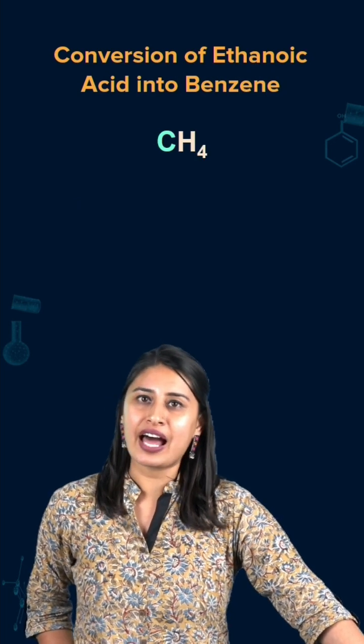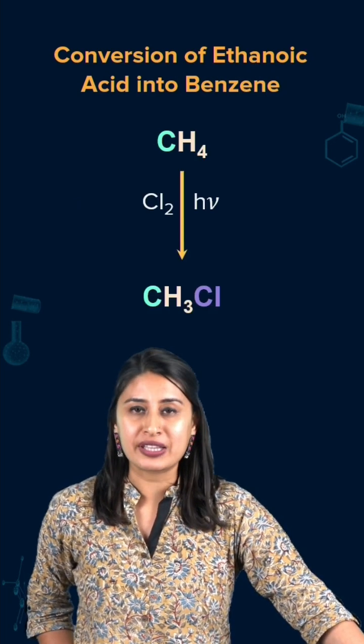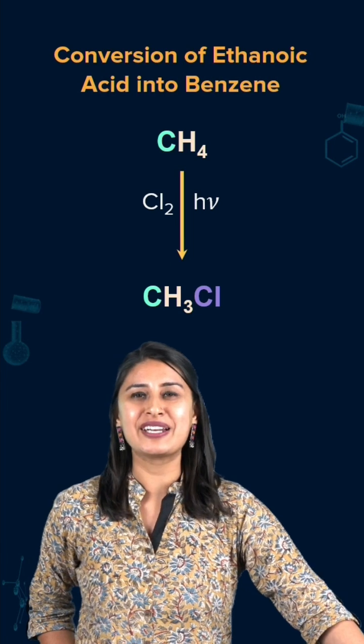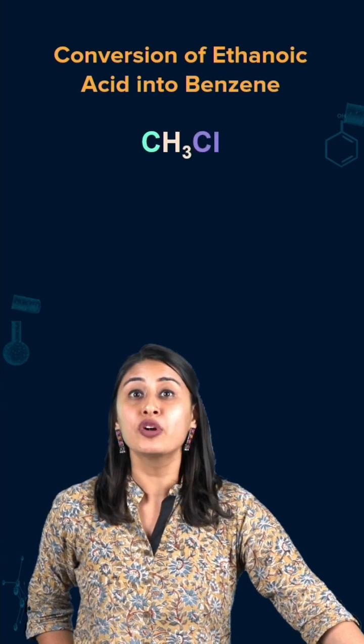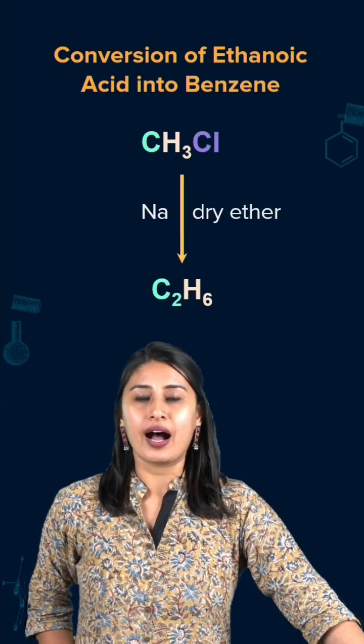Now we have methane. We can do halogenation and we will get methyl chloride. Now our favourite — Wurtz reaction — such that we get ethane.